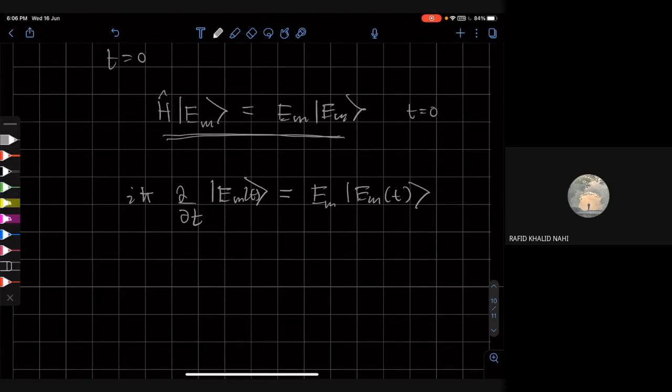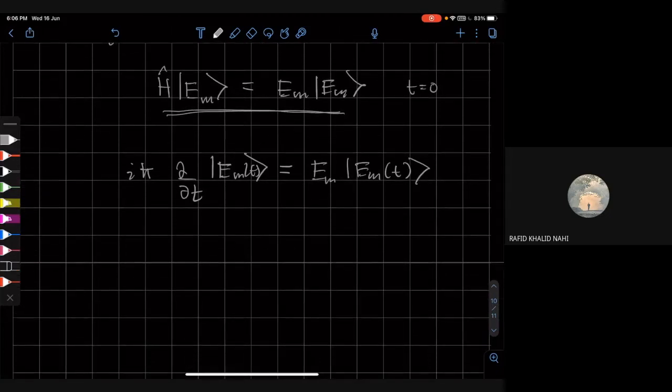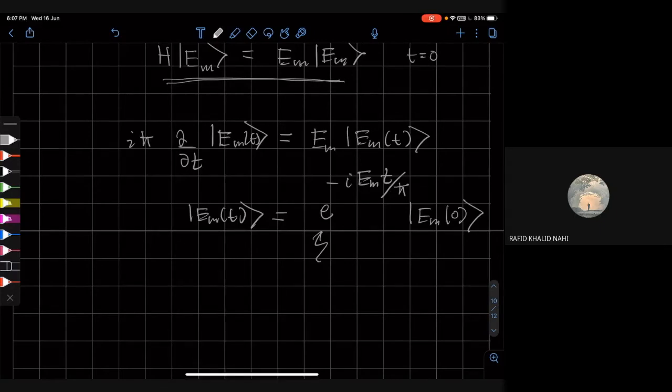So now, we are also assuming that H here is time independent. So that means that the eigenvalues E would also be time independent. So this is a very easy equation to solve. So this is the time dependence of the energy eigenvalues - it's given by just this phase factor involving the energy of the state.